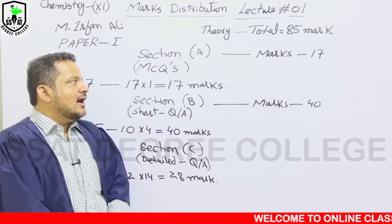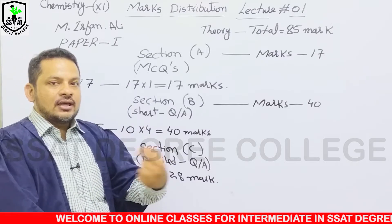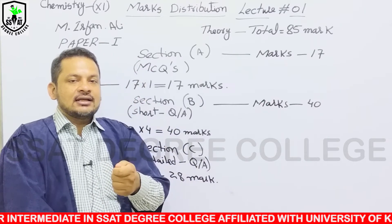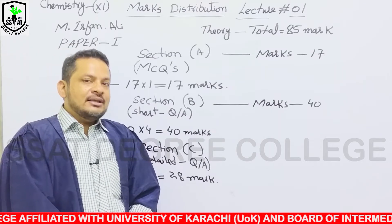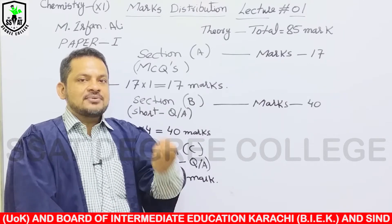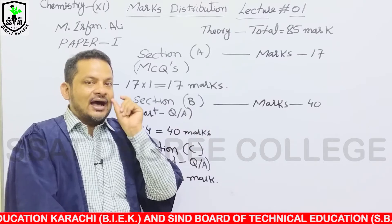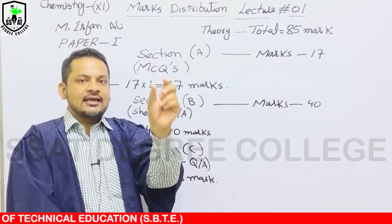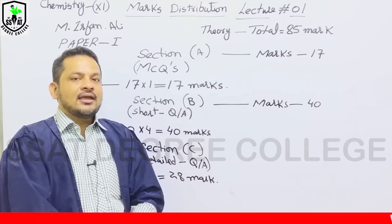Section A का Paper Total 20 Minutes का होता है। Examination Hall में Invigilator आपको Copy देने के बाद Section A का Paper Provide करेगा। 20 Minutes बाद वो Paper वापस ले लिया जाएगा। इसमें आपको 1 से 17 तक सारे Questions Attempt करने होंगे और Correct Answers अपनी Copy पर लिखने होंगे।